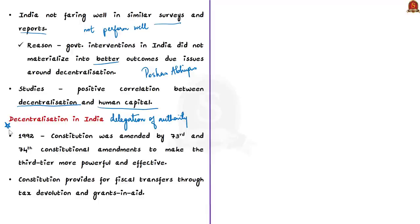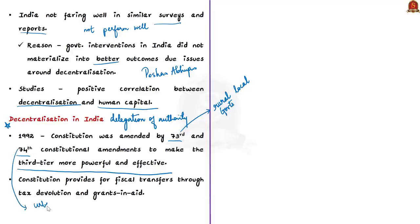In 1992, the constitution was amended by the 73rd and 74th Constitutional Amendments to make the third tier more powerful and effective. The 73rd Amendment is about rural local governments or Panchayati Raj institutions, and the 74th Amendment made provisions related to urban local governments or Nagar Palikas or municipalities. On the fiscal front, the constitution provides for fiscal transfers through tax devolution and grants-in-aid to address revenue imbalances between the center and states.